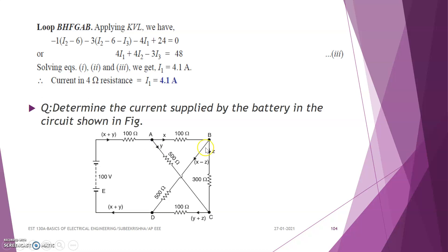The second loop is BCDB and the third loop is ABDEA. Since we have three unknown currents, we take three meshes or loops for analyzing the circuit.